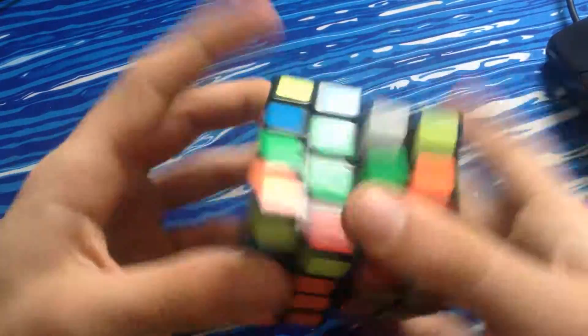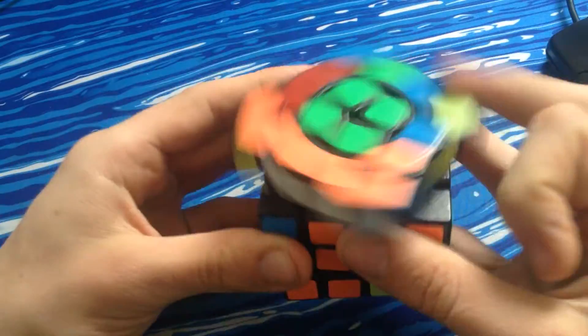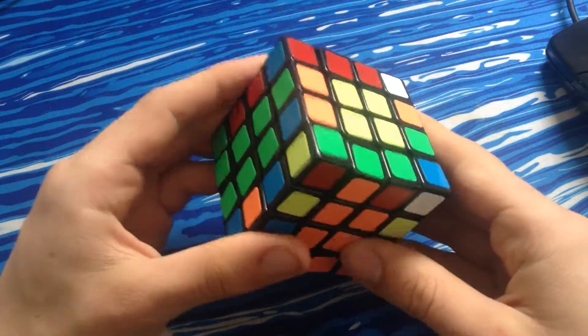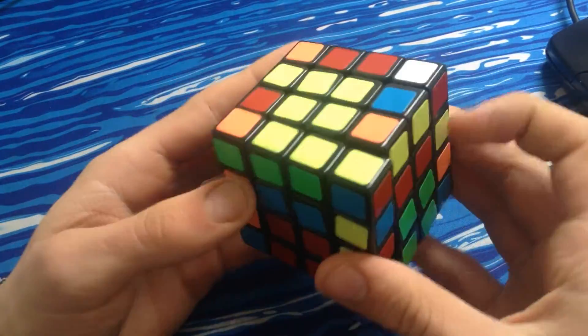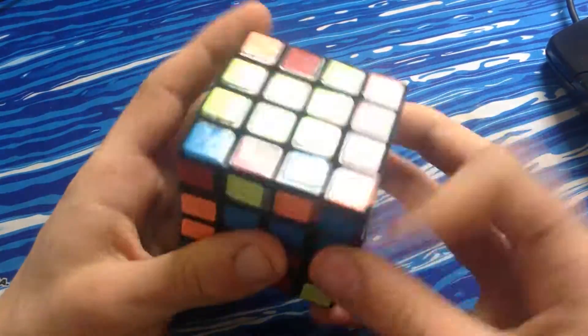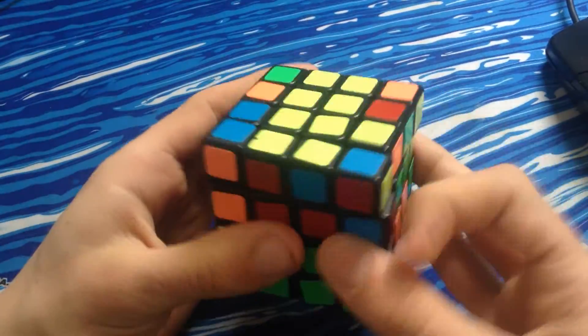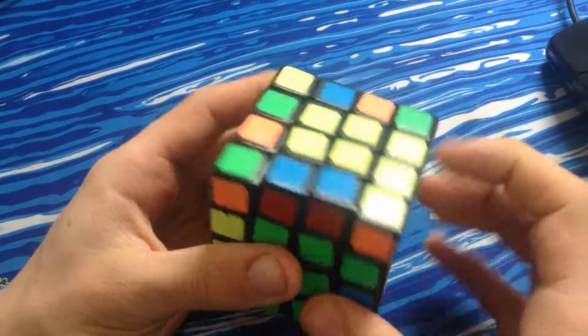There's the two edges I need, so I'll solve it and then just do a D. Misaligned by U', I spotted green, orange, and now I need to look for orange, blue. So there's the orange, blue, yellow, red, it's just over there, so I do a U'.